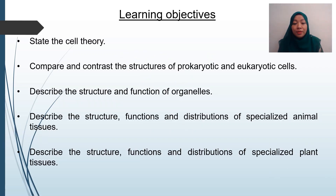These are the learning objectives for this chapter. By the end of the chapter, you are able to state the cell theories, and you are able to compare and contrast the structure of prokaryotic and eukaryotic cells. We are going to look into the characteristics of prokaryotic and eukaryotic cells. Next, describe the structure and function of organelles, and we are going to look into various types of organelles.